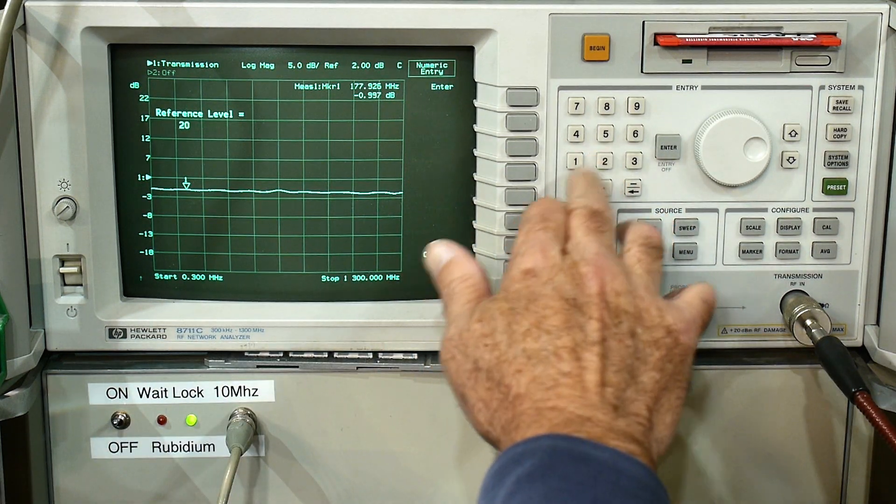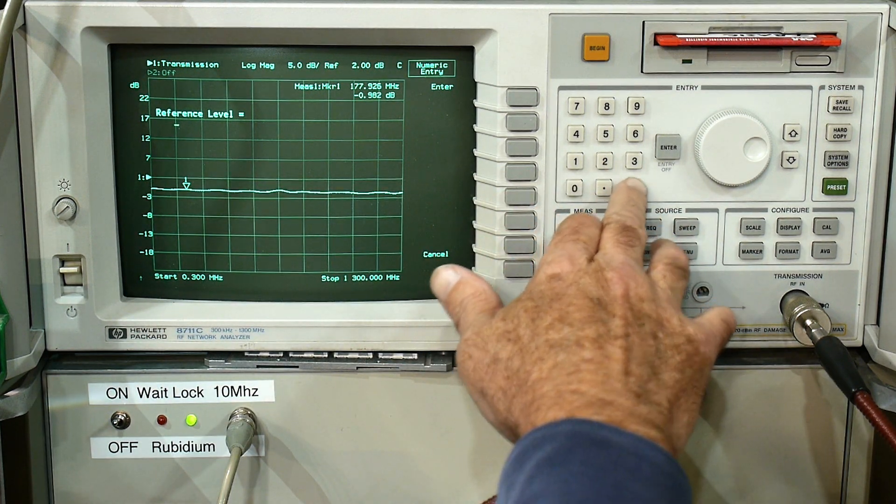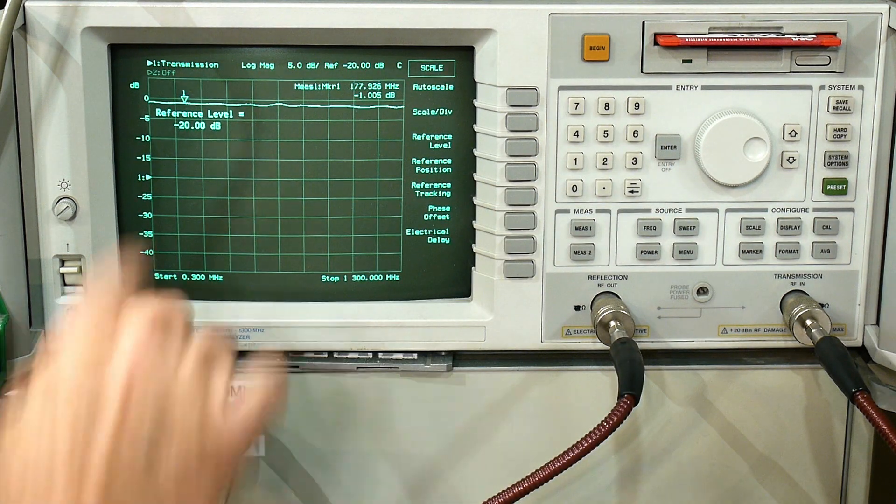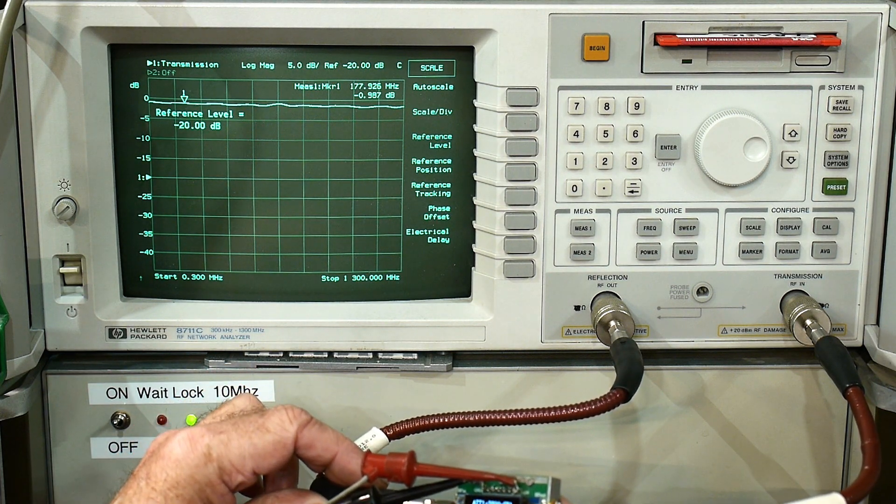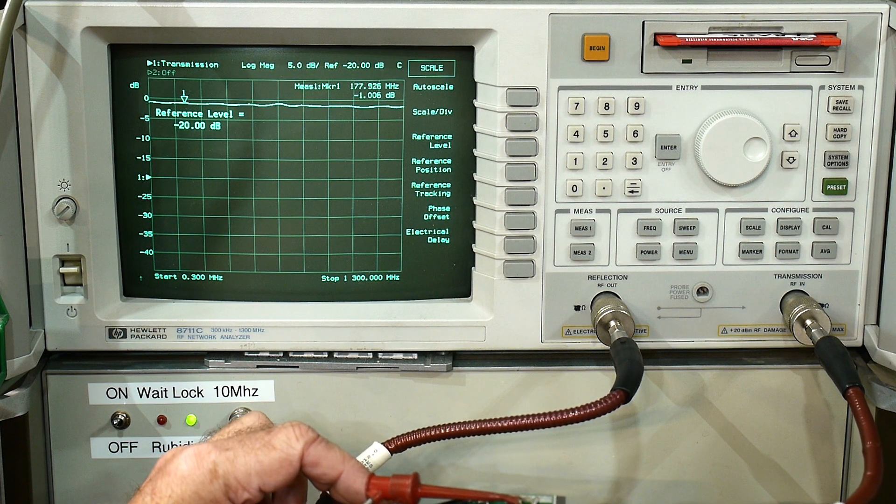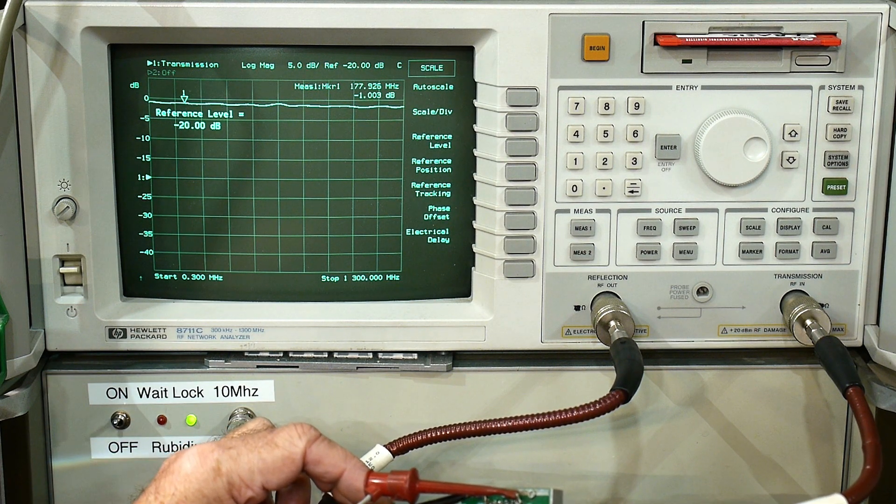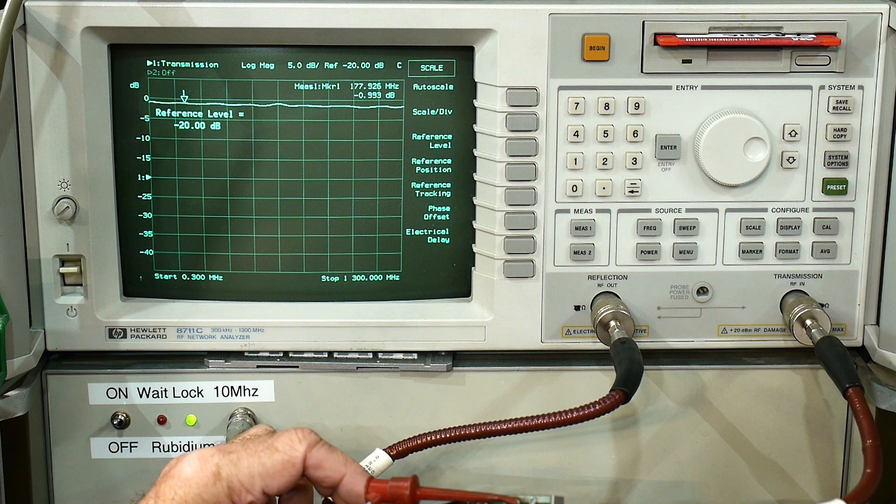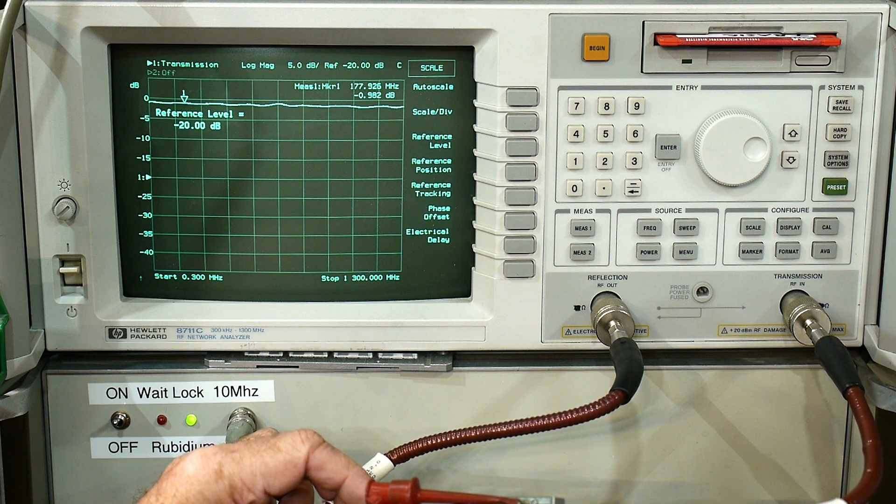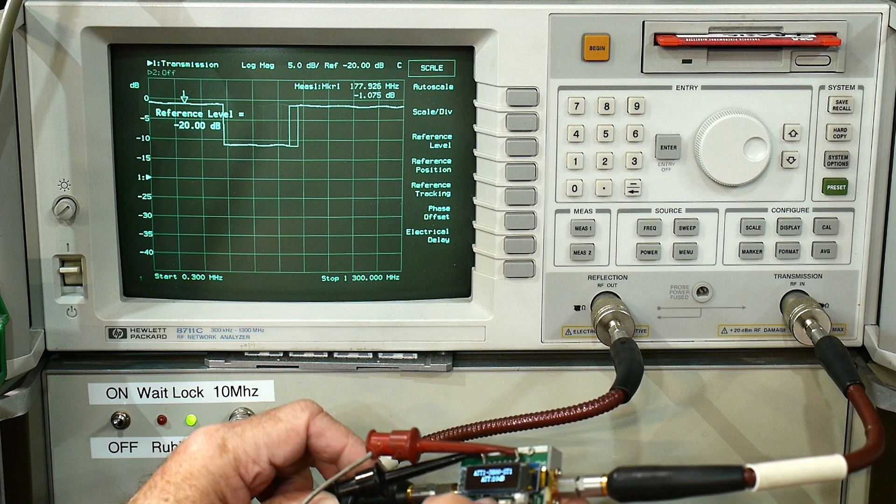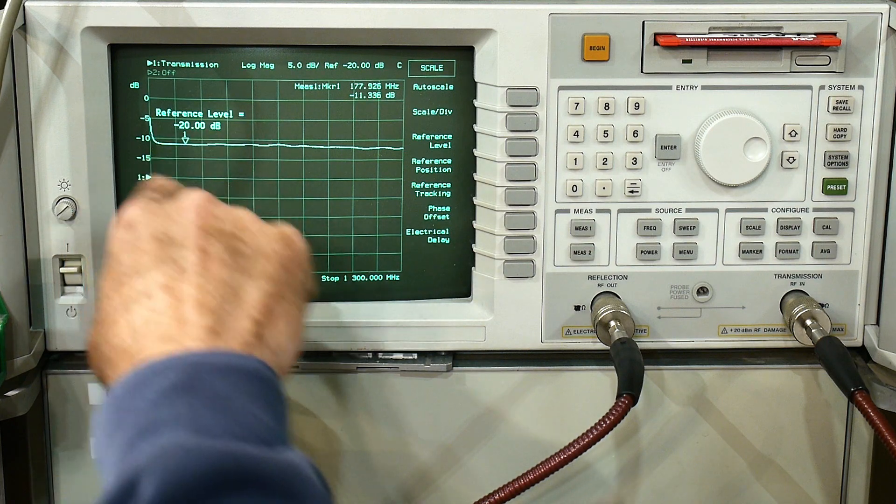We'll set the reference level to minus 20. So we'll be up here near the top and then we can add attenuation. So I will change the attenuator to minus 10. Here's minus 5, and here's minus 10. How do you make this thing go? Okay, there we go. So now you can see that we're much lower than minus 10.